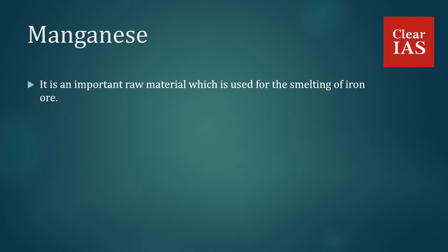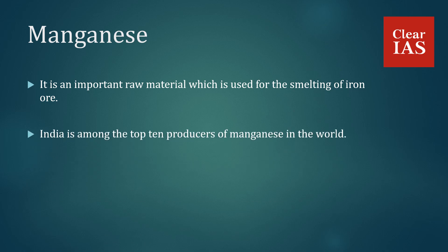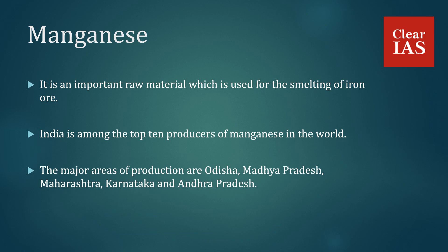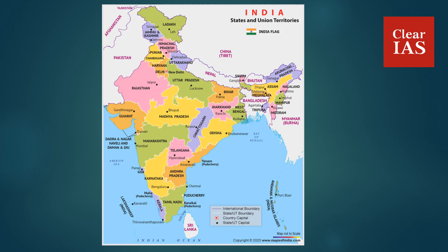Manganese is an important raw material used for the smelting of iron ore. India is among the top 10 producers of manganese in the world. The major areas of production are Odisha, Madhya Pradesh, Maharashtra, Karnataka and Andhra Pradesh. The important manganese reserves are located in Sambalpur and Sundargarh in Odisha.